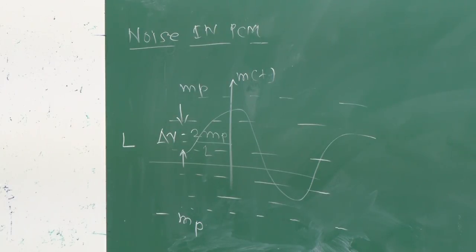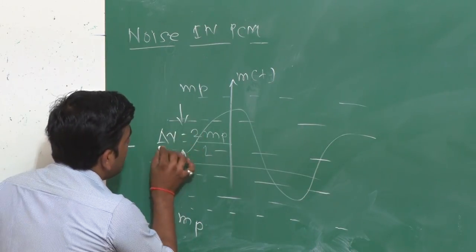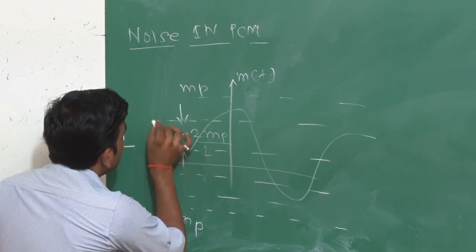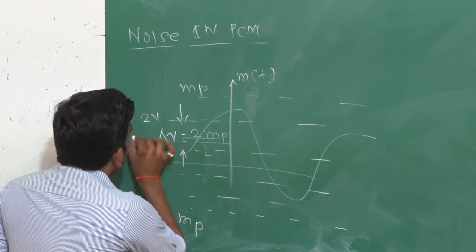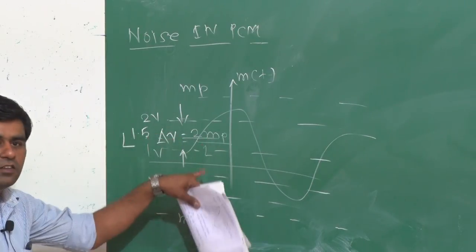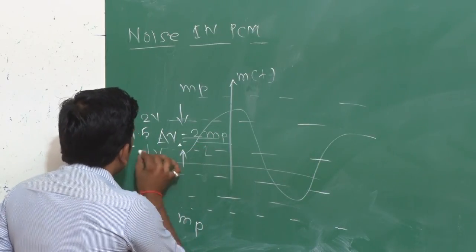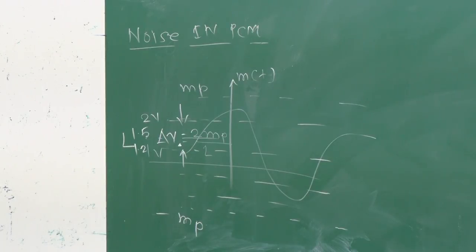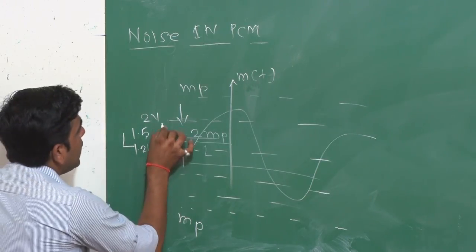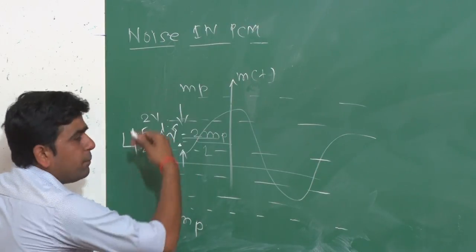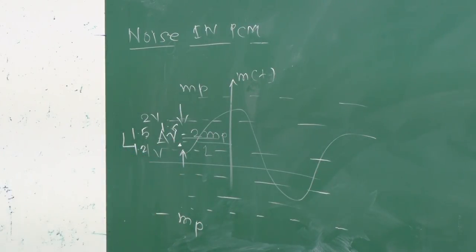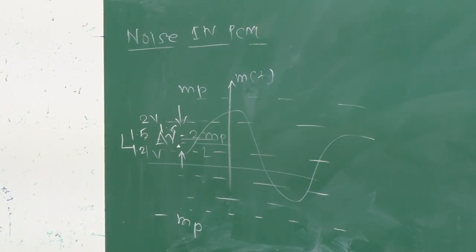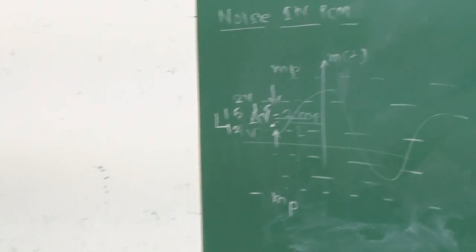We have to use the rule of midpoint approximation. Consider that one level is 1 and the next is 2, with midpoint at 1.5. If a sample value is 1.2, we approximate it to 1.5. If the value is 1.6, it is set to the upper limit. The difference is called quantization error. The maximum quantization error is step size divided by 2.